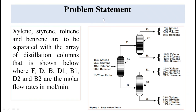This is the problem statement: xylene, styrene, toluene and benzene are to be separated with an array of distillation columns as shown in the figure. F, D, B, D1, B1, D2, and B2 are the molar flow rates in moles per minute, as shown in the figure.